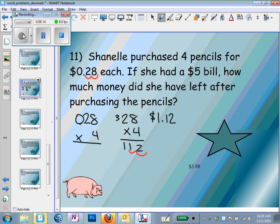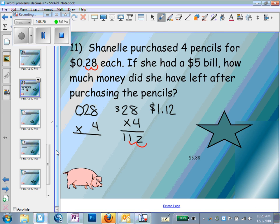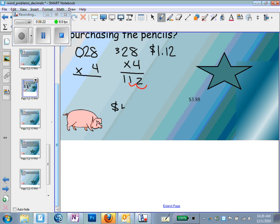Now we have a $5 bill and we need to find the change we're going to have. So we're going to take our $5 bill and subtract the cost of the four pencils. So that's $5 minus $1.12. So we have $3.88 left after the purchase.